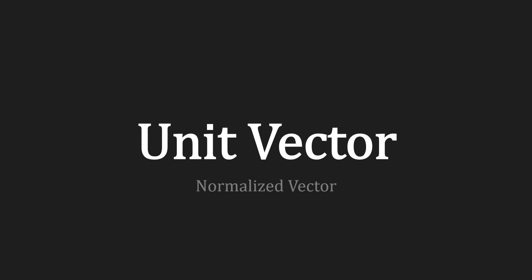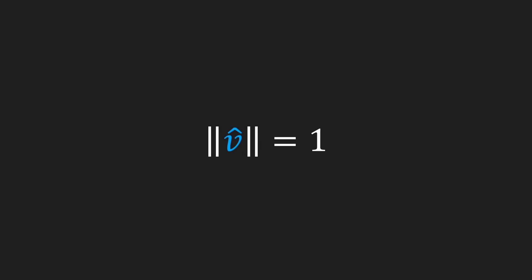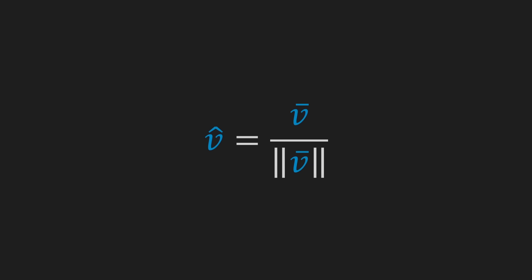Concerning a vector's length, there is a special case which we call a unit vector. It's also referred to as a normalized vector. We write such a vector with a hat on top of it, and a normalized or unit vector is nothing more than a vector with a length of 1. In fact, we can take any arbitrary vector, divide it by its length, and then the result will be a vector that points in the same direction as the original vector but has a length of 1.